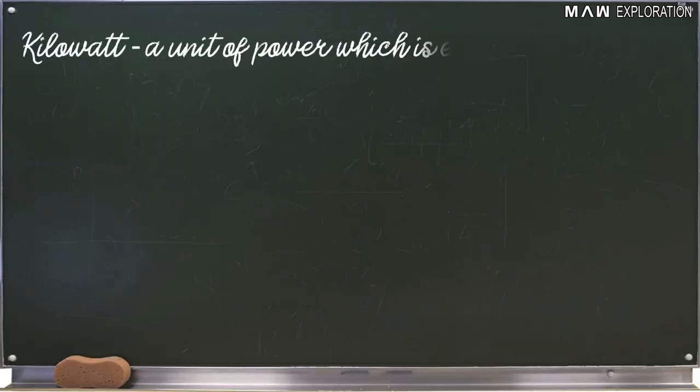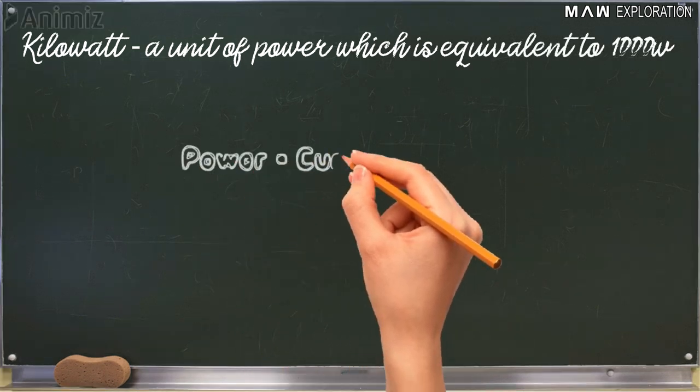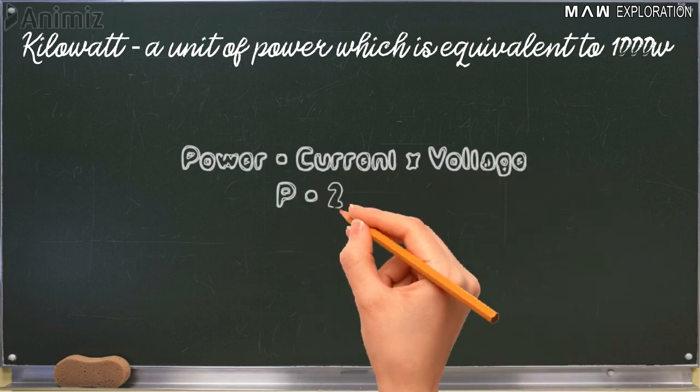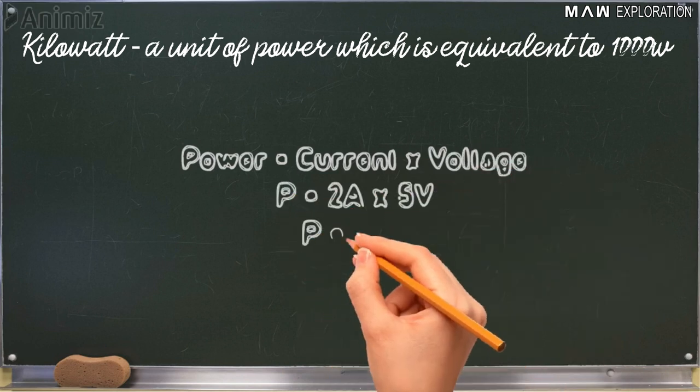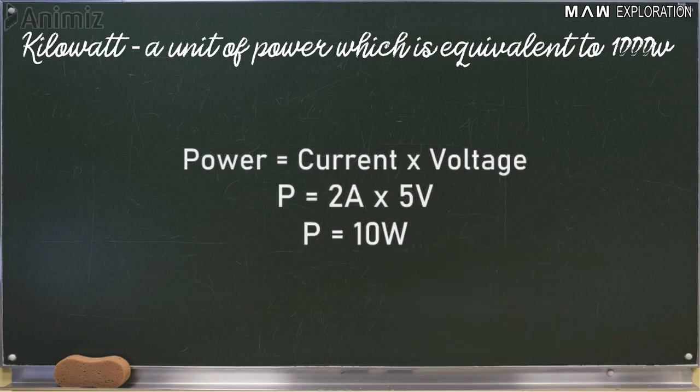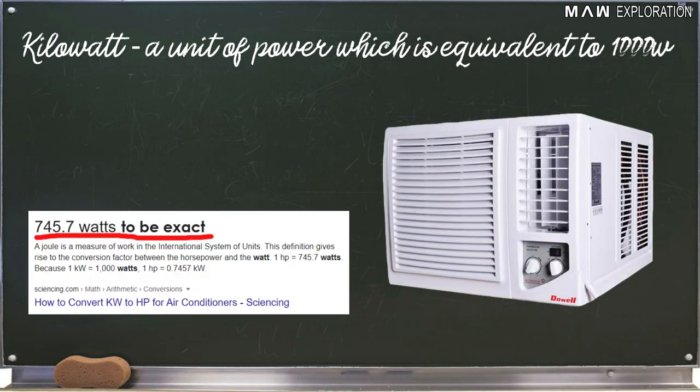Number three, kilowatt. Kilowatt is a unit of power that is equivalent to 1000 watt. My phone charger only consumed 10 watt which came from multiplying the voltage rating of 5 volts and an ampere rating of 2 ampere. While one horsepower air conditioning unit consumes around 1 kilowatt or 1000 watt of power.